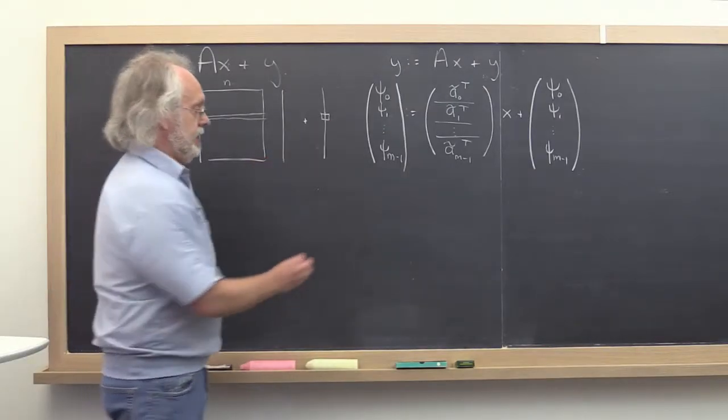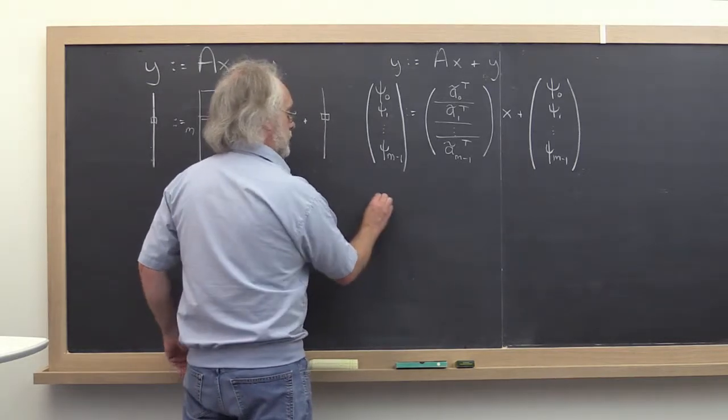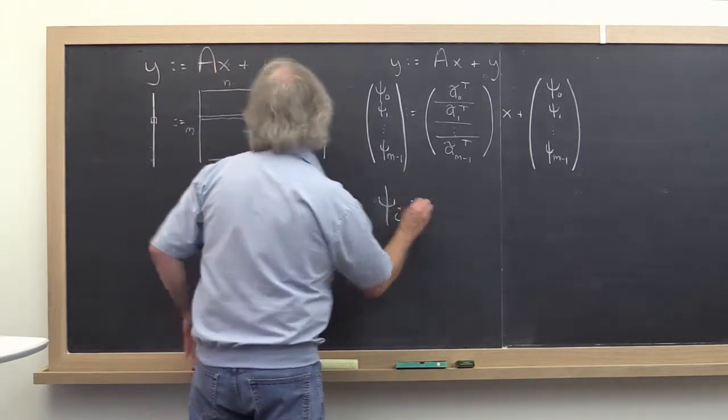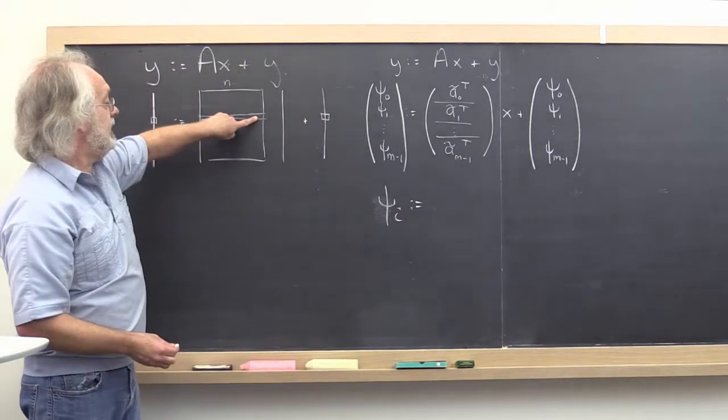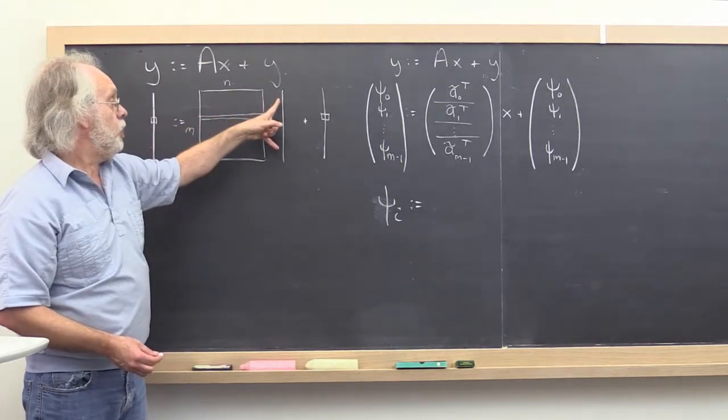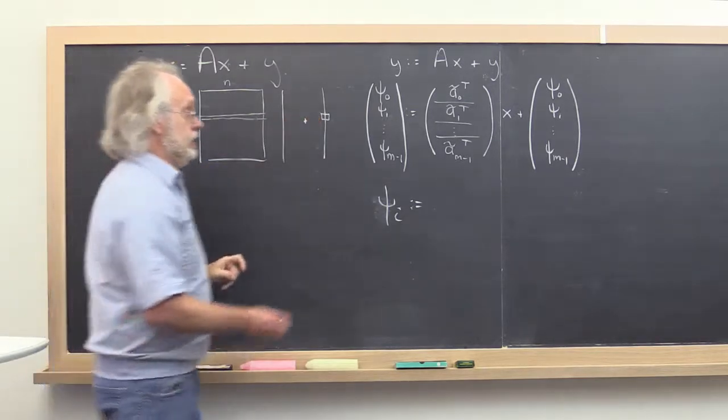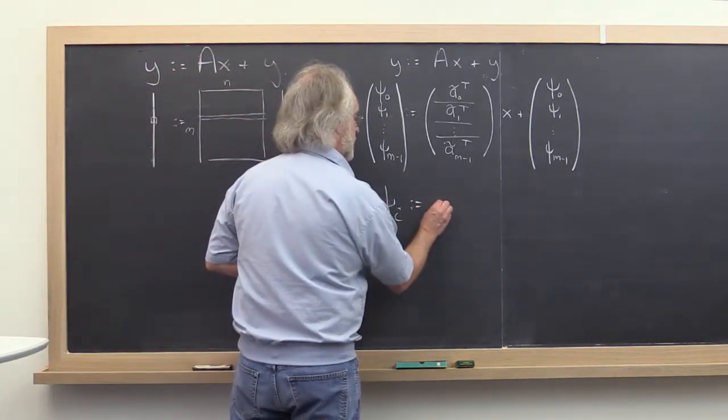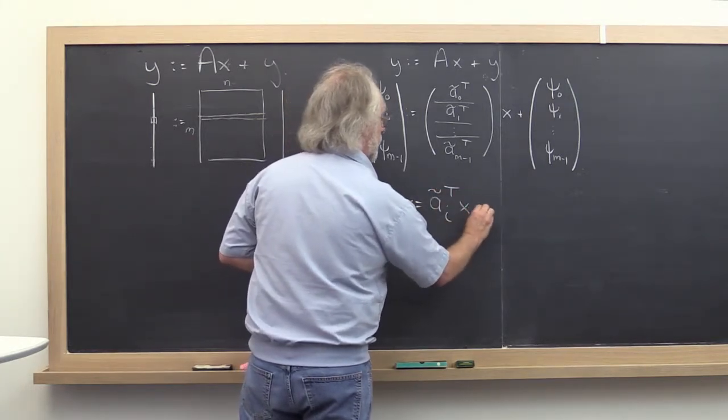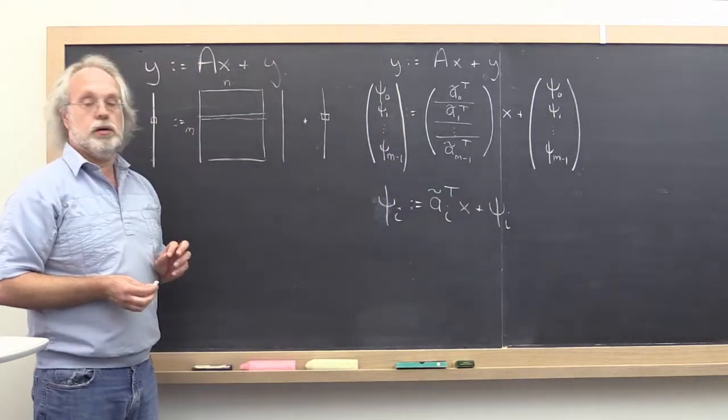So let's now pick the typical entry in Y. Let's call it psi sub i. Notice that what you learned was to take the dot product of the ith row of A with the vector x, adding that to the ith entry in Y. So that can be expressed as A sub i tilde transpose x plus the ith entry of Y.